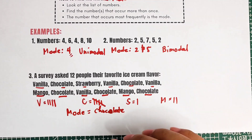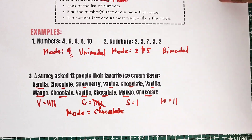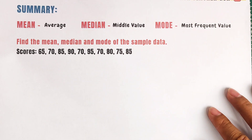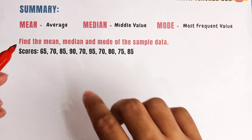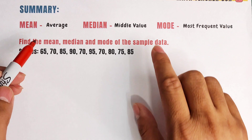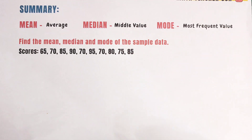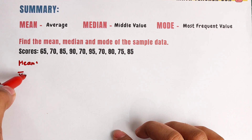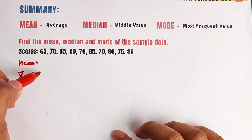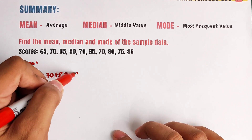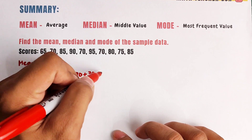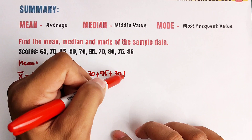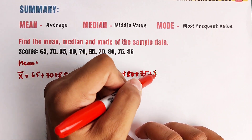I hope you're learning something from this video. Now we will go with the last part — we will try to summarize our understanding about the mean, median, and mode. When you say mean, that is the average. When you say median, that is the middle value. Mode is the most frequent value. Let us now find the mean of these scores: x-bar equals 65 plus 70 plus 85 plus 90 plus 70 plus 95 plus 70 plus 80 plus 75 plus 85.